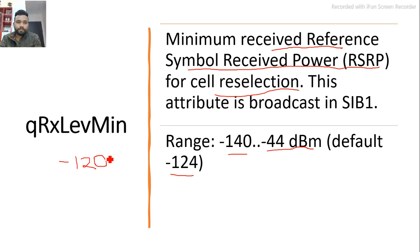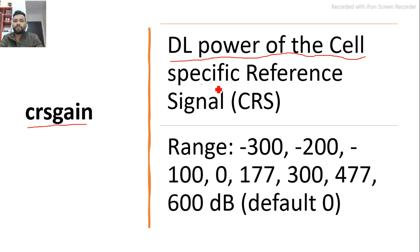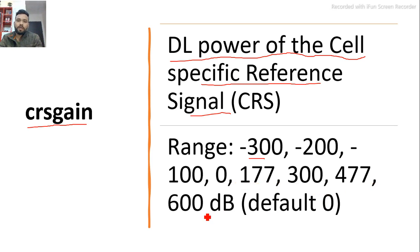The second parameter is CRS Gain. This is the downlink power of the cell-specific reference signal. Its range is minus 300 to 600 (in units of 0.01 dB steps, i.e., effectively minus 3 dB to 6 dB), and the default value is 0 dB.